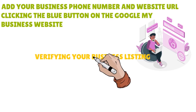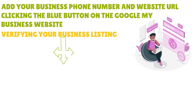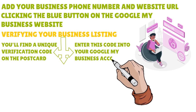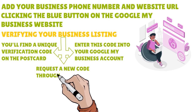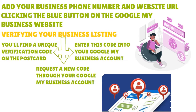You also need to verify your business listing. Validation of your Google My Business listing is a vital stage in the setup procedure. This typically involves a postcard being sent to your virtual office address, containing a unique verification code. Enter this code into your Google My Business account. If the postcard doesn't arrive, you can request a new code through your GMB account. For businesses with multiple locations, a bulk verification option is available that requires submitting a form with key contact details, enabling all locations to be verified simultaneously.